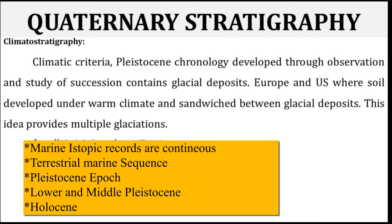The terrestrial-marine sequence of the Quaternary is best exposed in the southern part of Italy. It is the type area in which the Pleistocene is subdivided into five stages: Calabrian, Emelian, Sicilian, Milazian, and Tyrrhenian. The continental non-marine sequence of Pliocene-Pleistocene is known as the Villafranchian stage. The lower Villafranchian is Pliocene, whereas the middle and upper Villafranchian are early Pleistocene. The Pleistocene epoch is subdivided into informal time units — early, middle, and late — with formal subdivisions of lower, middle, and upper Pleistocene.